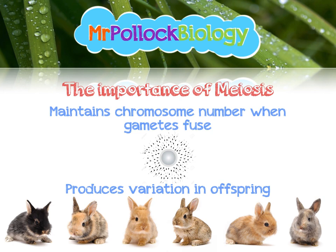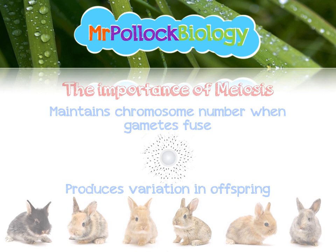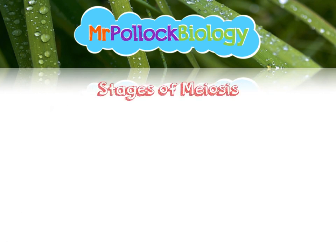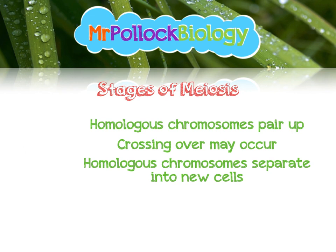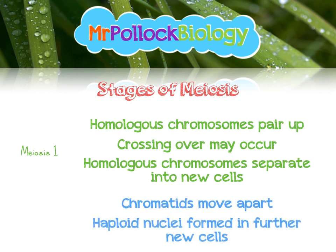Let's get into the actual stages of meiosis. First, the homologous chromosomes pair up. You might get some crossing over, and then the homologous chromosomes separate into new cells. This is meiosis 1. The second part involves chromatids moving apart from one another and haploid nuclei being formed in further new cells. This is meiosis 2. So meiosis 1 is the first division and meiosis 2 is the second division.